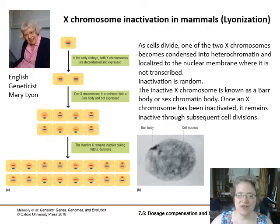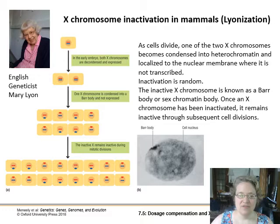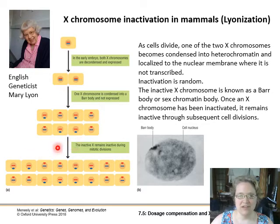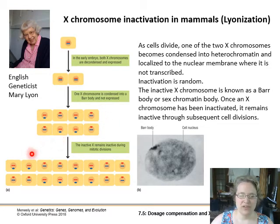As your cells divide, one of the two X chromosomes becomes condensed and gets tucked away against the nuclear membrane where it's not transcribed. This is random, and the interesting thing is that it doesn't happen at the very beginning when you're a single cell, but rather at around the eight-to-sixteen cell stage. Different cells in your body descended from those early cells will either have one or the other X chromosome transcribed, and it remains that way through all subsequent cell divisions.